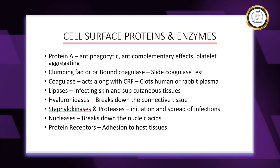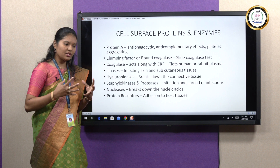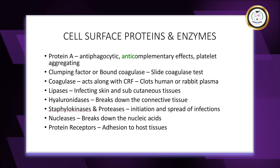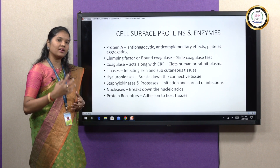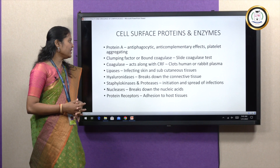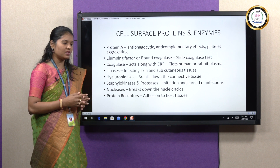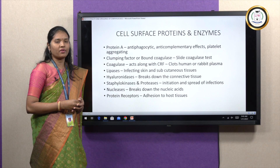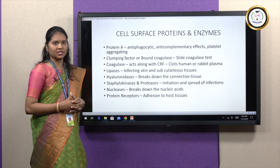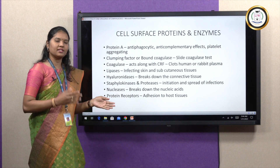The next virulence factors are cell surface proteins: protein A and the clumping factor. Protein A has several biological functions — it is anti-phagocytic, has anti-complementary effects preventing bactericidal effects of complement proteins, and aggregates human platelets. The clumping factor, also called bound coagulase, is an important feature of Staphylococcus aureus and is employed in the slide coagulase test. A drop of human or rabbit plasma is allowed to react with Staphylococcus aureus; if agglutination occurs, it indicates a positive test for bound coagulase, distinguishing S. aureus from other staphylococci.